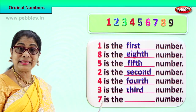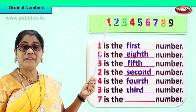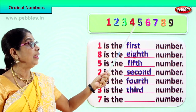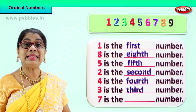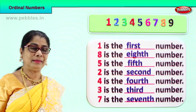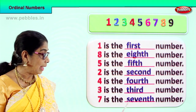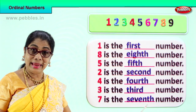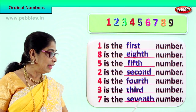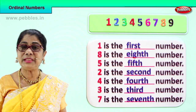Finally, we have a number here — seven. Let's find the position according to the ordinal number. First, second, third, fourth, fifth, sixth. Number seven is in the seventh position. Seven is the seventh number. Spell seventh: S-E-V-E-N-T-H. Say it again: S-E-V-E-N-T-H.